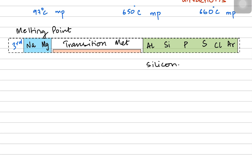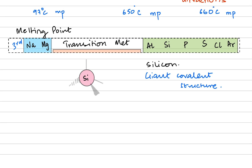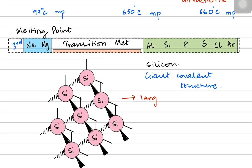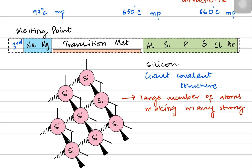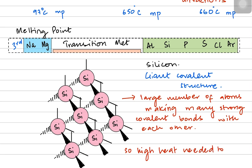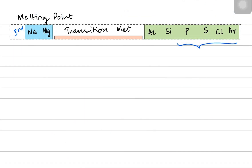Silicon is not a metal — it is a non-metal — but silicon has a giant covalent structure. An atom of silicon has four electrons in its outer shell, allowing it to form a tetrahedral structure. Silicon atoms continue to bond with each other to form a highly regular giant covalent lattice with a large number of covalent bonds and many atoms bonded together. That is why silicon has a very high melting point: a large number of atoms make many strong covalent bonds, requiring a lot of heat to break them. Silicon has the highest melting point in the entire period 3.